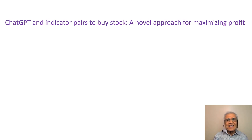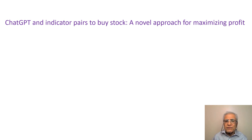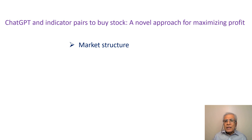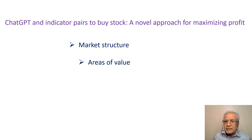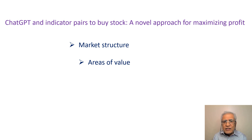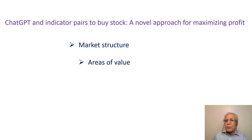Hello and welcome back to this channel. ChatGPT — an indicator pairs to buy stock — a novel approach for maximizing profit. This video utilizes ChatGPT to conduct a comprehensive analysis of market structure by examining different indicators and market patterns. The goal is to identify areas of value where the market presents opportunities for profitable trades. The study analyzes three indicator pairs: simple moving average and RSI, simple moving average and MACD, and simple moving average and Bollinger Band. These three pairs are chosen because they are widely used and provide different insights into market trend and momentum.